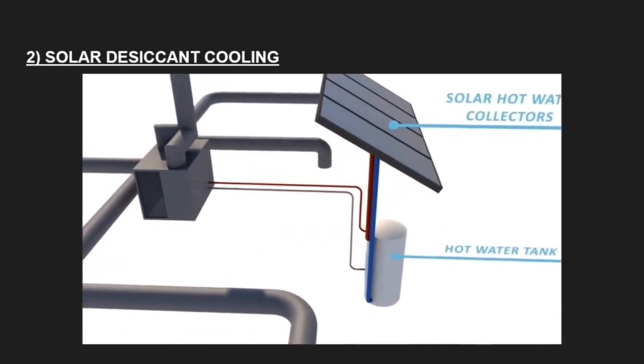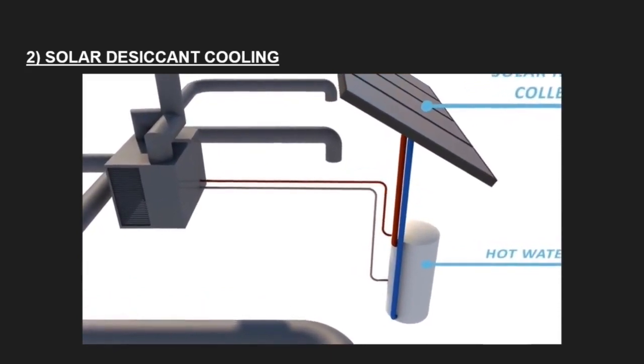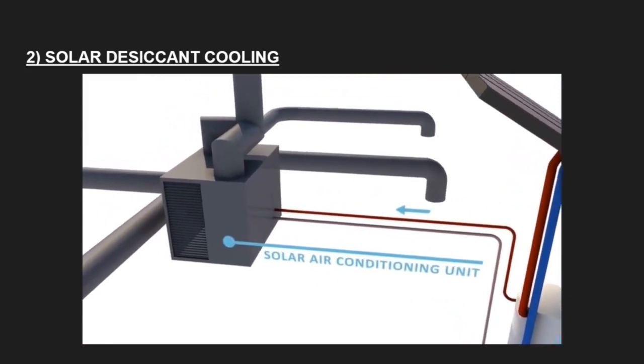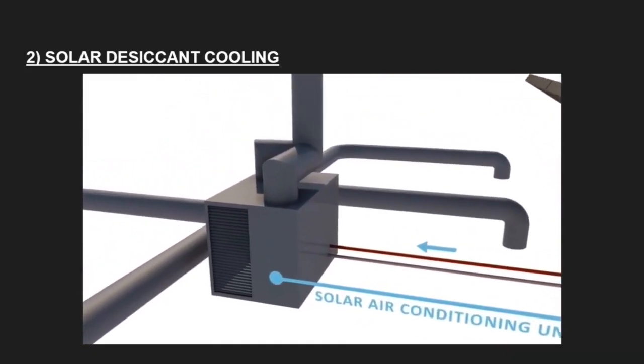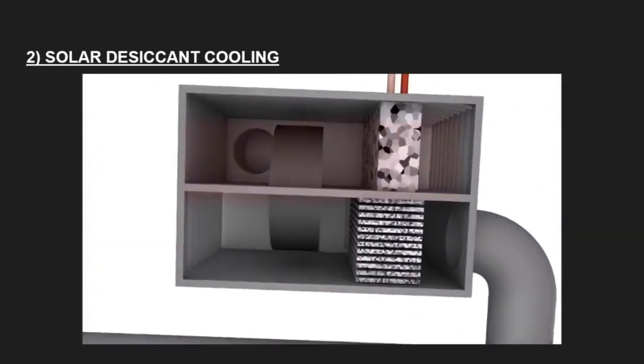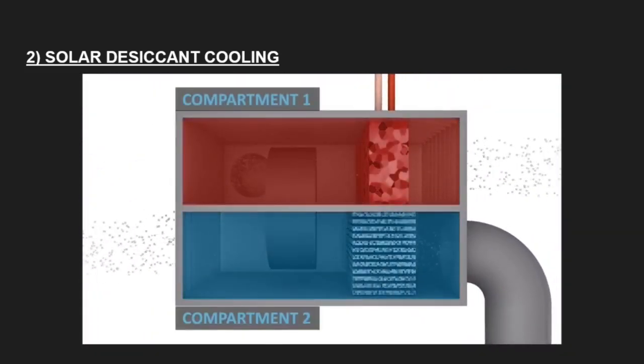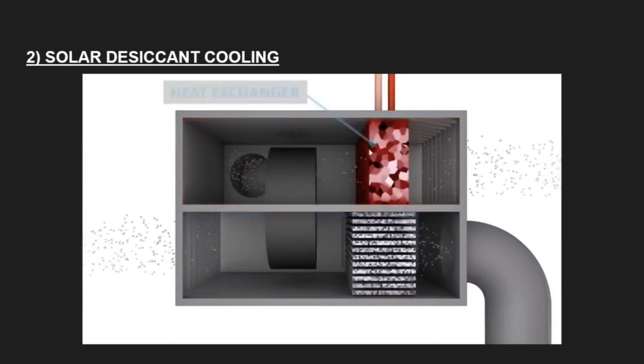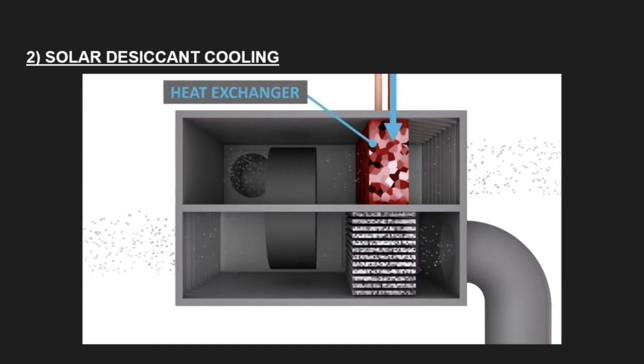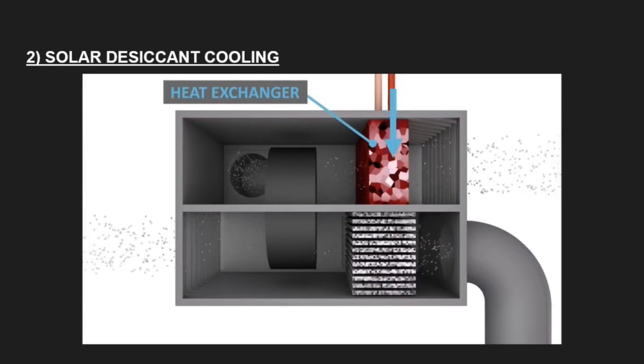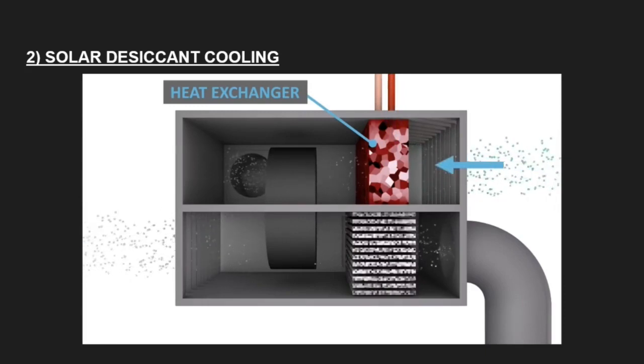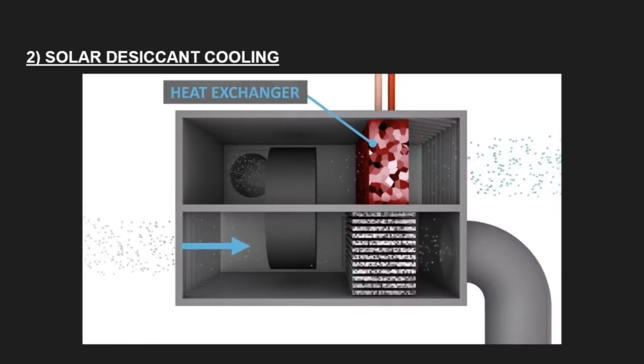CSIRO's solar air conditioning is an innovative three-in-one technology that provides hot water, cooling, and heating using only a fraction of the electricity of current systems and halving greenhouse gas emissions. The process begins with a typical solar hot water system. Water is heated by solar panels and stored in the hot water tank. A portion of the hot water is diverted into the solar air conditioning unit which is divided into two compartments. The hot water enters a heat exchanger in the first compartment.